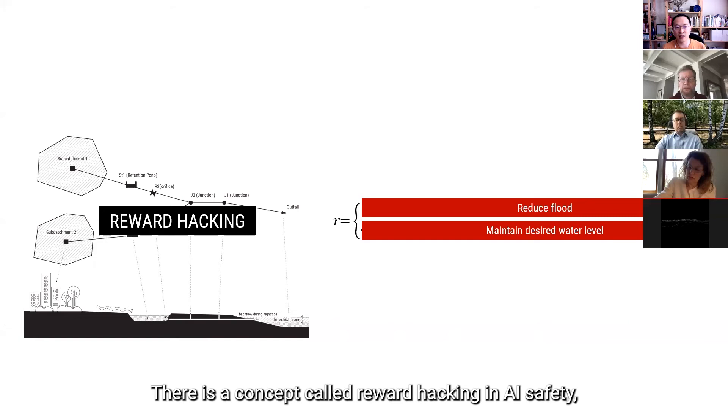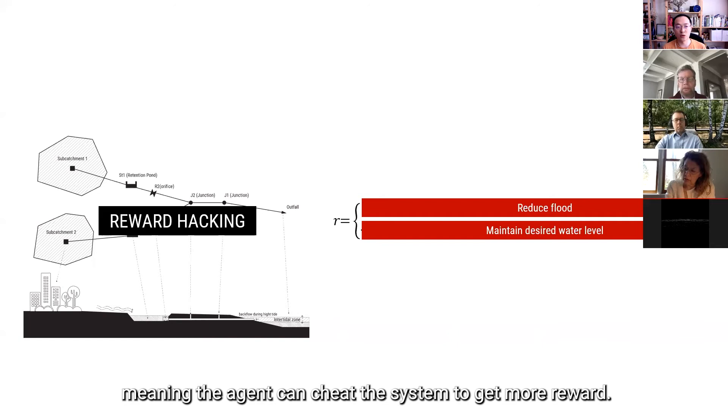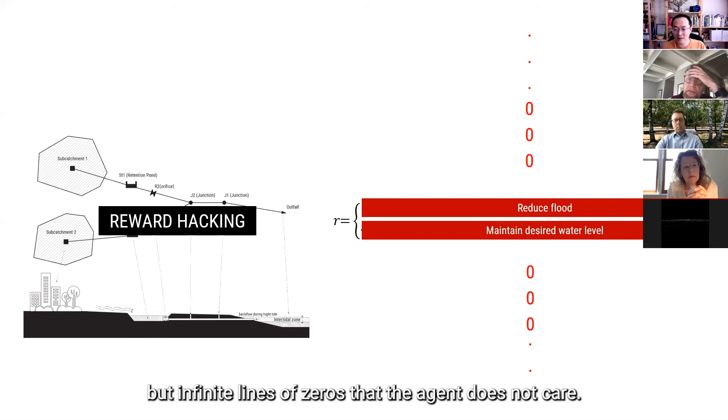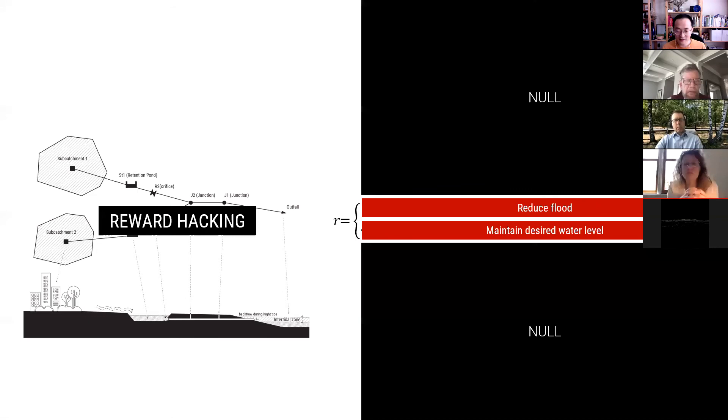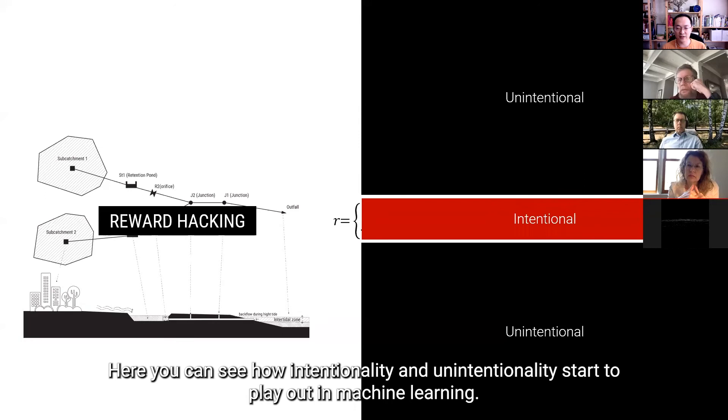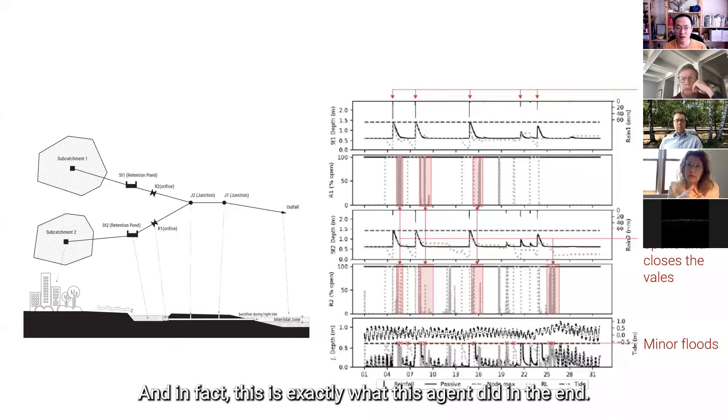So, in this function, even though it appears to be two lines, but in fact, it's infinite lines of zeros that the agent does not care. But the funny thing is that this null space becomes where an agent can exploit the reward function and doing something unexpected. And here you can see how this intentionality and unintentionality start to play out in machine learning as well. So, and in fact, this is exactly what this agent did in the end.